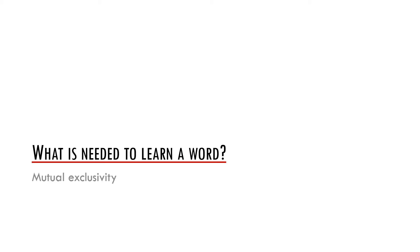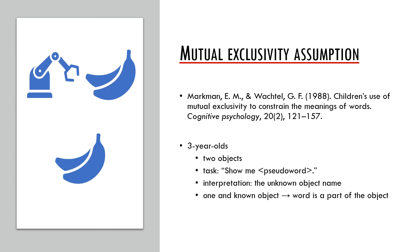The last principle I would like to focus on is the mutual exclusivity assumption. This is the idea that children tend to think words do not overlap in their meanings. This assumption was introduced in a study by Alan Markman and Gwen Wachtel in 1988. They ran experiments with three-year-olds. In one of them, children saw two objects — one known, such as a banana, and one unknown.